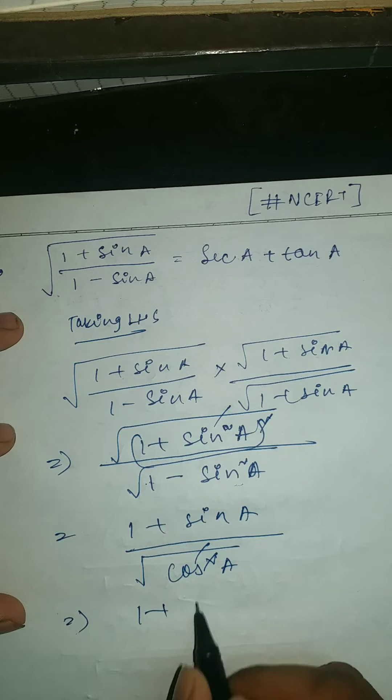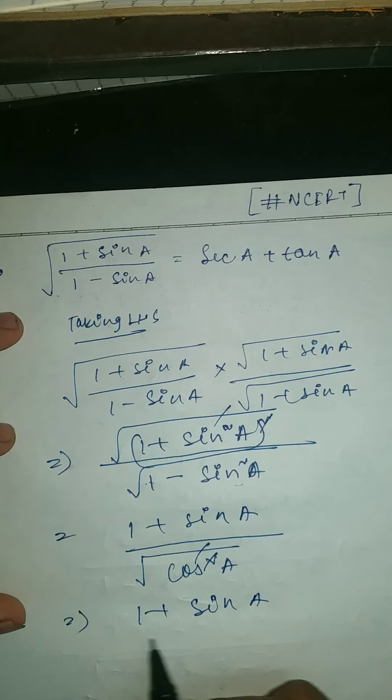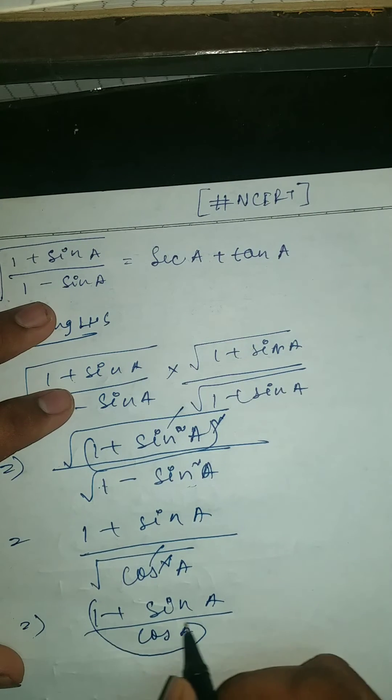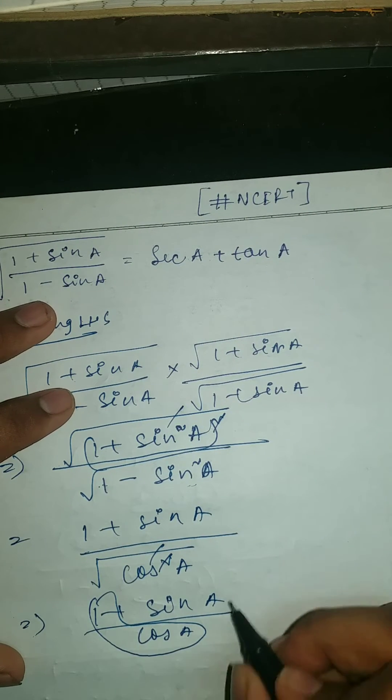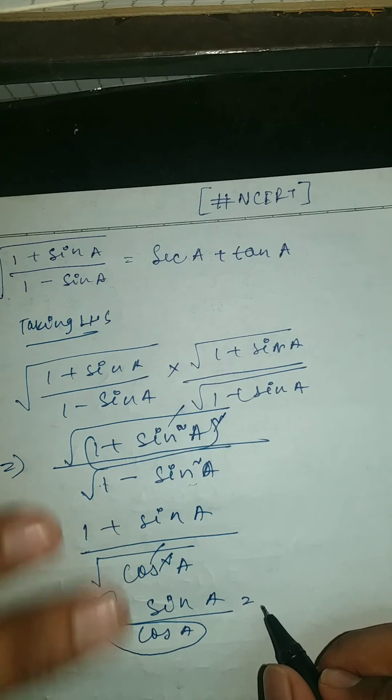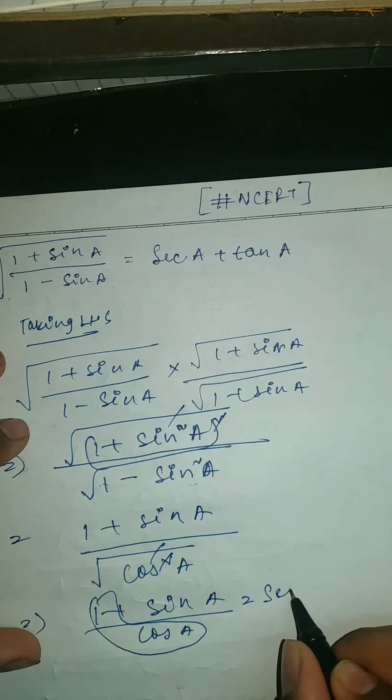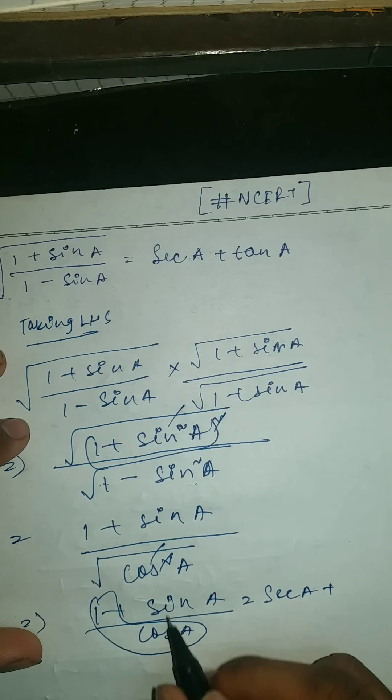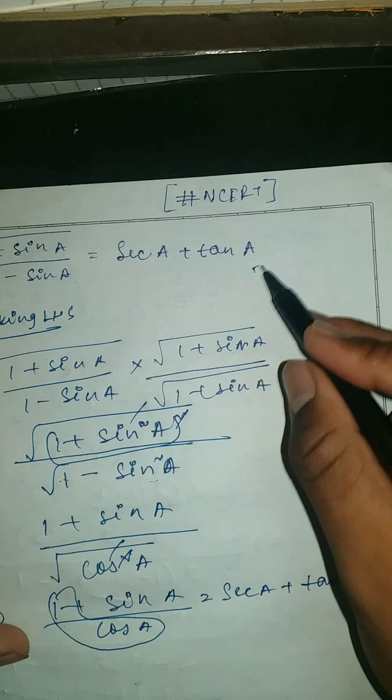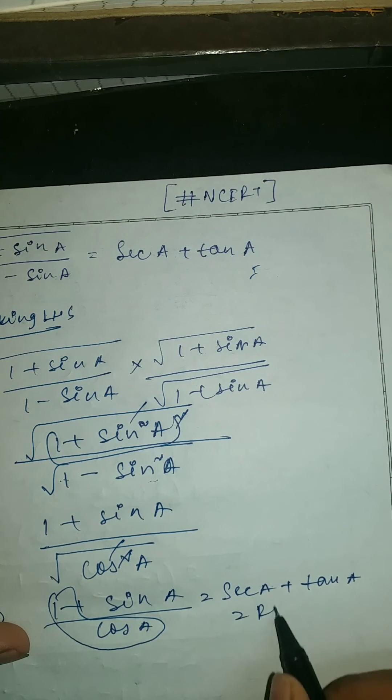So what we got: we got (1 + sin A) / cos A, and here 1 + sin A. This is 1 / cos A, which is sec A, and plus sin A / cos A is tan A, which is your RHS. So hence proved, it is equal to RHS.